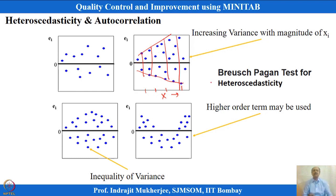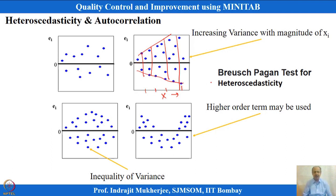Non-constancy of variance is not recommended. When it exists, the interpretation may be wrong, and the judgment may also be wrong — you may have rejected the null hypothesis when it should not have been rejected. This is something we must be careful about.